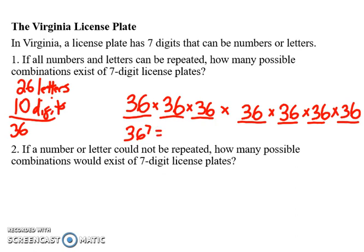That number — 36 to the 7th — equals 78,364,096 different outcomes. That's a lot of outcomes.